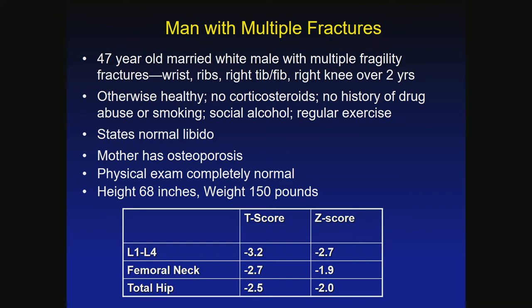Case 5: A man with multiple fractures of the wrist, ribs, tibia-fibula, and knee. He's otherwise healthy — no steroids, no drug abuse, no smoking, regular exercise. He reports normal libido. His mom had osteoporosis. In men under age 50, we use the Z-score for diagnosis rather than T-score. His Z-score, particularly at the spine, is really low, as is the total hip and femoral neck. We need additional tests. Importantly, even if he reports normal libido, we must get testosterone.